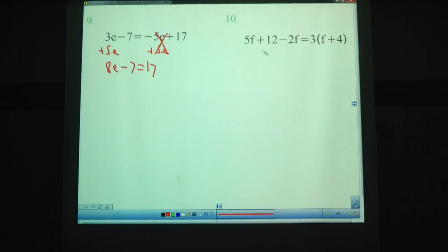Number 10, 5f minus 2f gives us 3f plus 12 equals, distribute that, 3f plus 12. Subtract 3f, and then we end up with 12 equals 12. Wait, that's not a, we know the solutions, right? That means that our solution is that f can equal anything. It doesn't matter what f equals. f equals all real numbers.